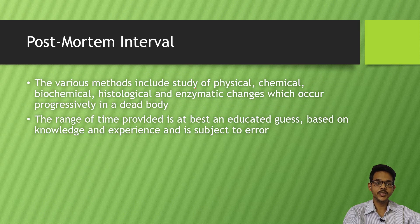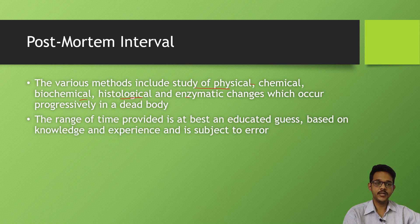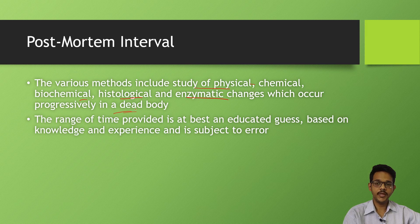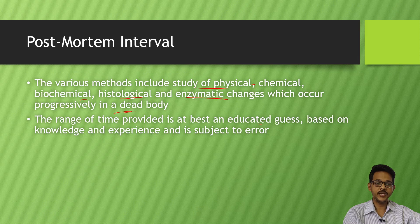The various methods include physical, chemical, biochemical, histological, and enzymatic changes which occur post-mortem in dead bodies. There are many methods by which time since death can be estimated. The range of time provided is best an educated guess. It is always a guess based on knowledge and experience - it may change and has many errors.